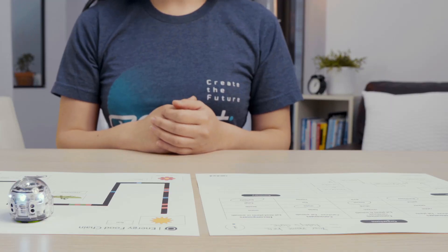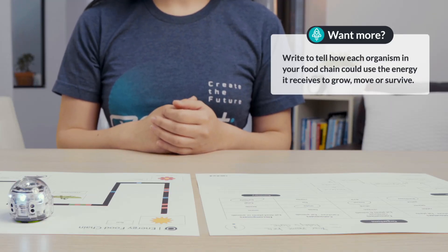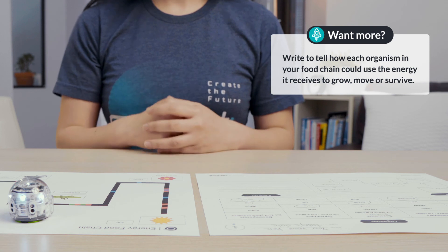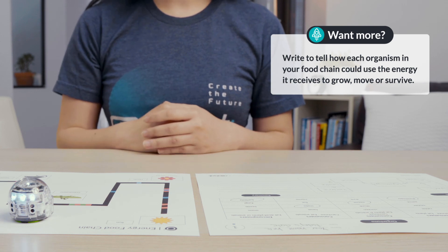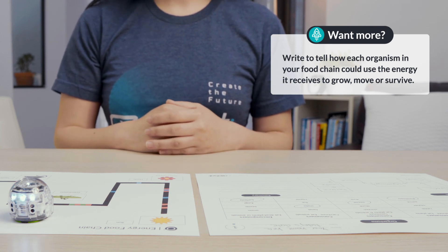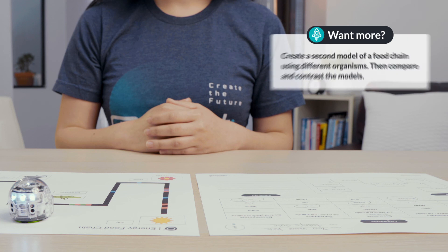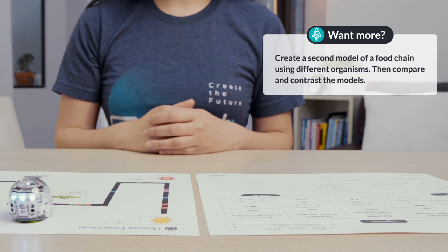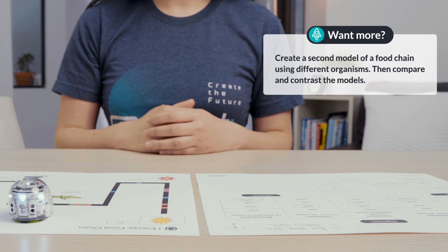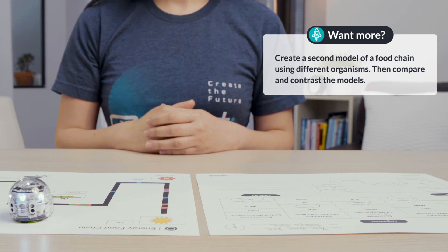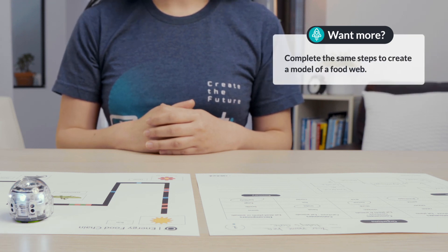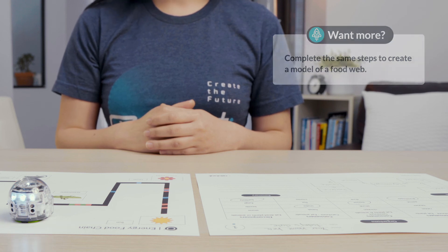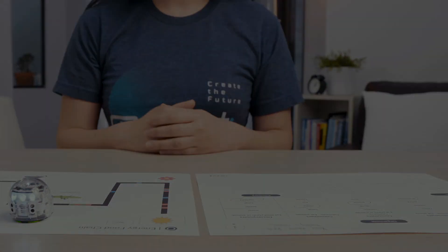If you're looking for more to do, write to tell how each organism in your food chain could use the energy it receives to grow, move, or survive. Create a second model of a food chain using different organisms, then compare and contrast the models. Or complete the same steps to create a model of a food web. Come back again soon for our next lesson.